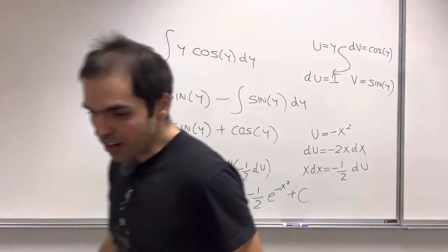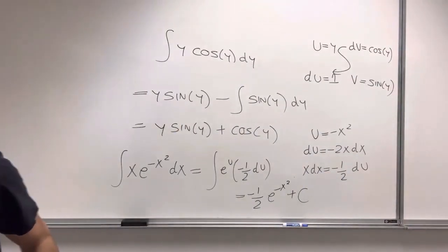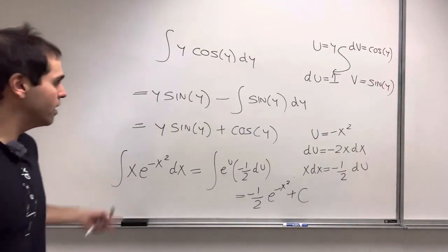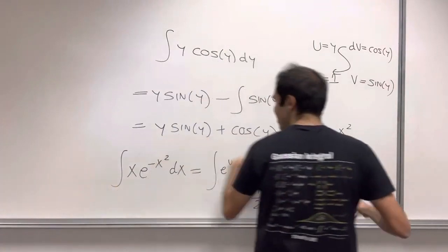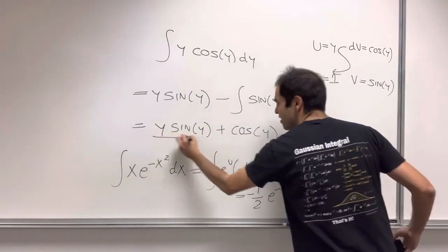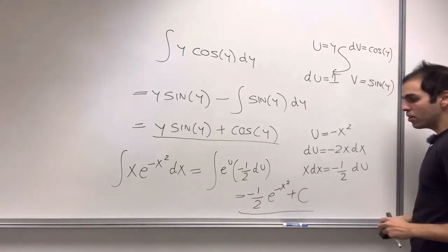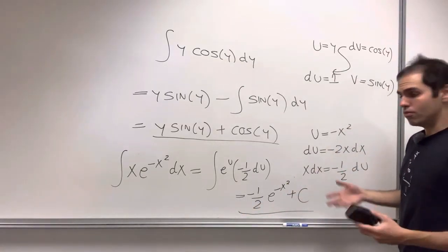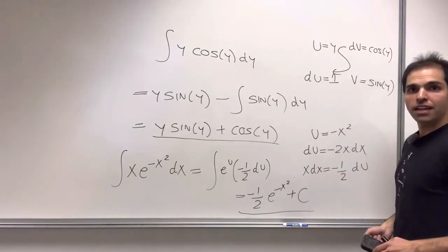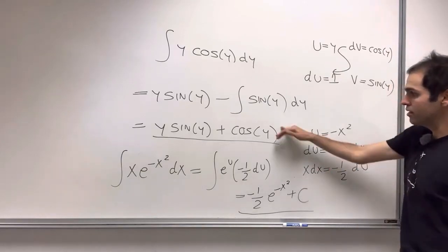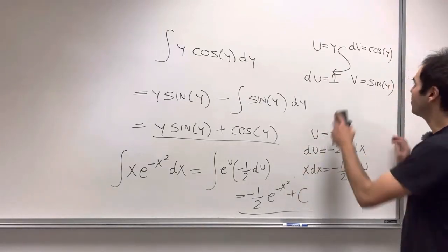So now we can put our constant. And then what we're left with is, well, we do have equality between those two things. So y sine of y plus cosine of y equals minus 1 half e to the minus x squared plus a constant. So let's just equate both sides.